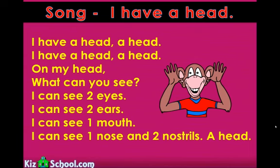I have a head, a head. I have a head, a head. On my head, what can you see? I can see two eyes. I can see two ears. I can see one mouth. I can see one nose and two nostrils. A head.